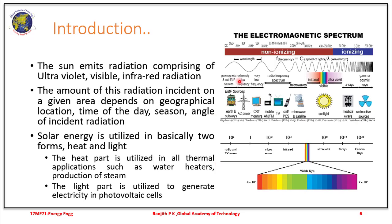The sun basically emits radiation comprising infrared, visible, and ultraviolet radiation. The amount of radiation incident depends on the location, time, and season. This incident solar energy can be utilized in two forms: heat and light. The heat part is utilized in thermal applications such as water heaters, production of steam, etc. The light part is utilized to generate electricity in a photovoltaic cell or PV cell.